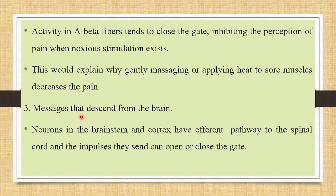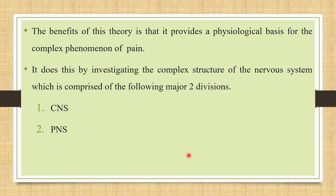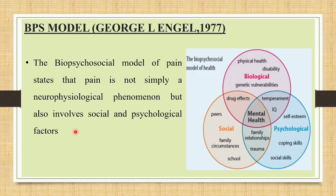The third factor is messages that descend from the brain. Neurons in the brain stem and cortex have pathways to the spinal cord, and descending impulses can open or close the gate. The benefit of this theory is that it provides a physiological basis for the complex phenomena of pain by investigating the structure of the nervous system, comprising the central nervous system and the peripheral nervous system.